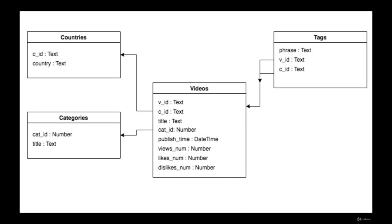There is a small diagram describing the whole database. We have the main videos table with foreign keys CID and cat_ID that point to the corresponding countries and categories tables. The tags table points to the videos table. We'll use these tables a lot in this course. In the course resources you can find the scripts that load the data into the database, and in the next few lectures I'll show you how to actually load the tables and data.